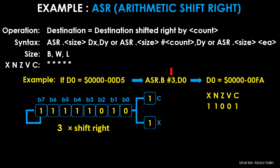X and C are both 1 because a 1 was shifted into both of them during the final shifting process. The N flag is 1 because FA is a negative 8-bit signed number. Z is 0 because the result is non-zero. The overflow flag V is 0 because no overflow occurred during the shift operation.